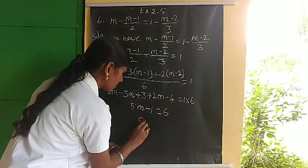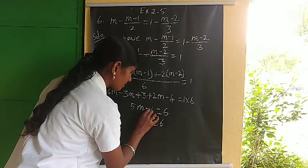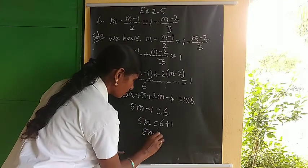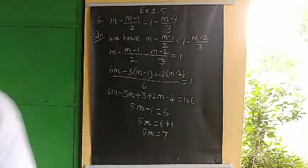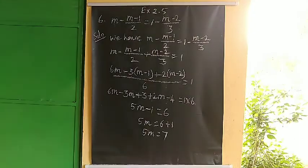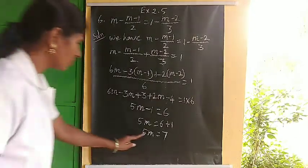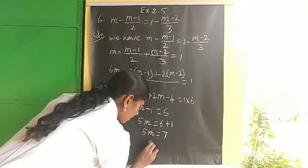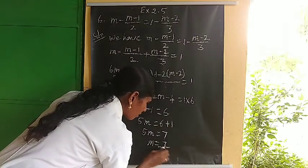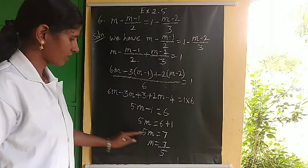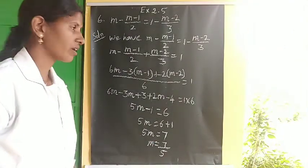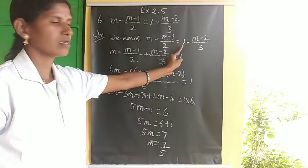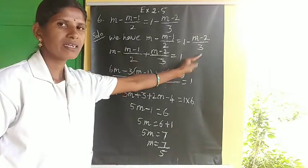So 5M equals 7, which means M equals 7 by 5. This is the required solution.